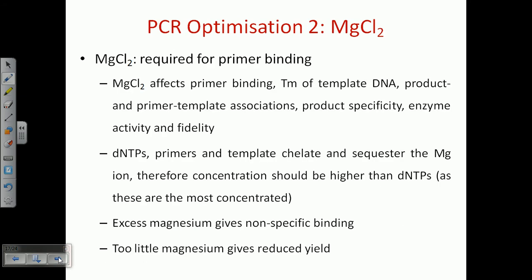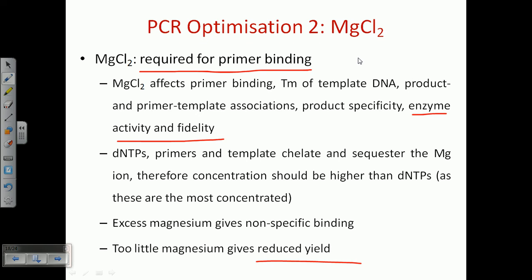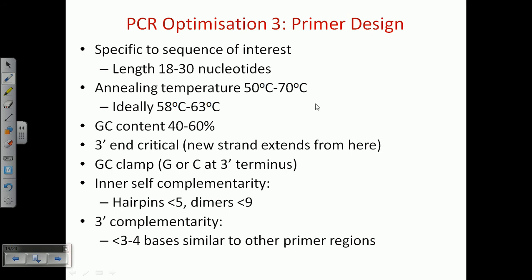Second is the concentration and application of magnesium chloride. It is required for primer binding and for the attachment of primer to DNA. The concentration of the primer-template association is very important because it affects product specificity, enzyme activity, and fidelity. Excess magnesium can give non-specific binding, and too little magnesium can give a reduced yield. DNTPs, templates, and primers can sequester and chelate magnesium ions, so you need to be very careful about the concentration of MgCl2.